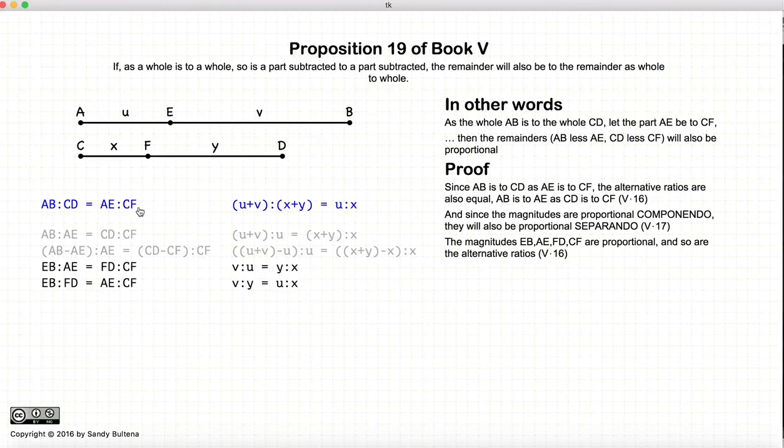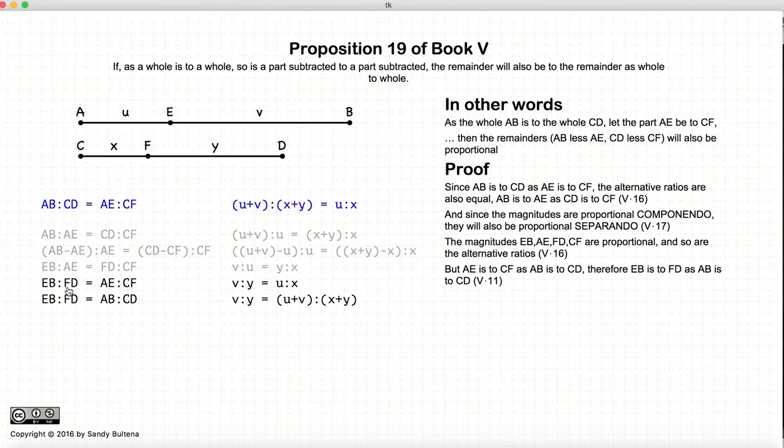Well, this ratio here is the same as this ratio here. These two are equal to AB to CD and EB to FD respectively. So in other words, canceling out AE to CF, we end up that EB to FD is equal to this, which is equal to this, which is equal to this. So therefore EB to FD is equal to AB to CD. And that is the proposition.